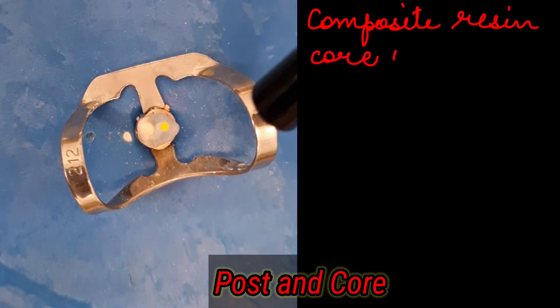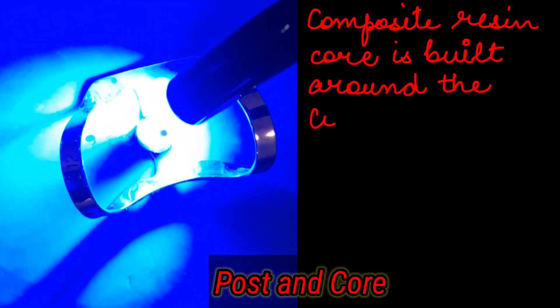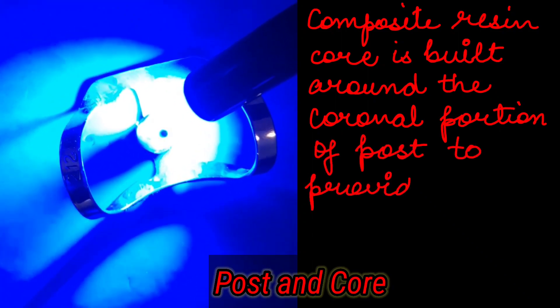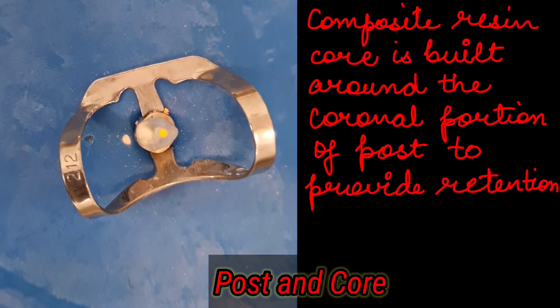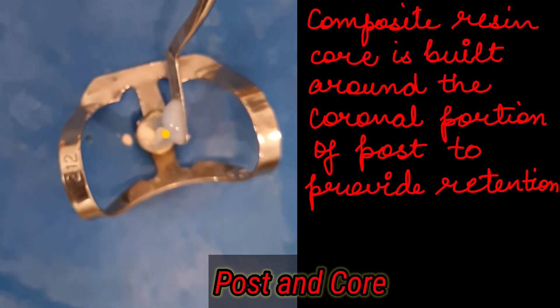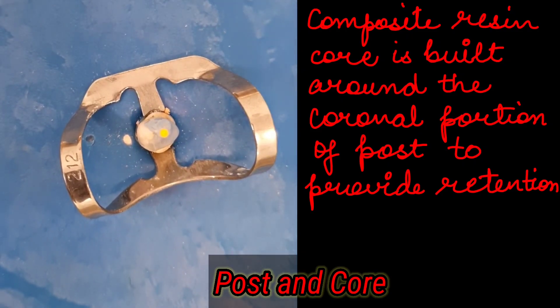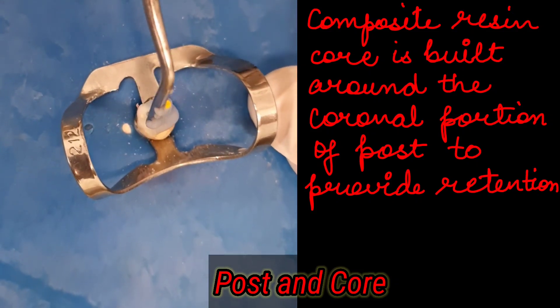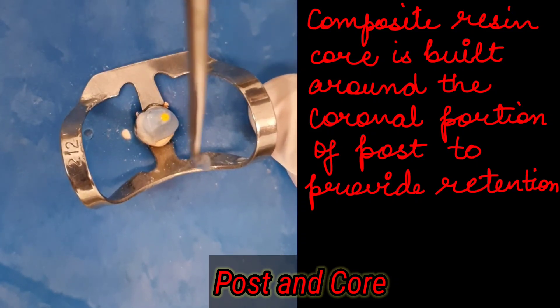Post and core is a very simple procedure. You have to prepare the post space using drills, then trial fit the fiber post to determine the desired length. After etching and rinsing the canal, place the adhesive on the tooth and then place the dual cure resin cement and core build-up material, and then do the final preparation. After the material is set, the final step is going to be the final preparation so that we can place a crown on top of it.